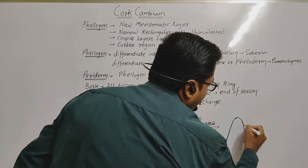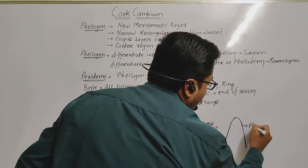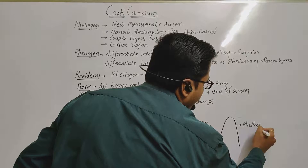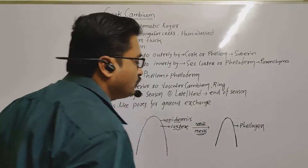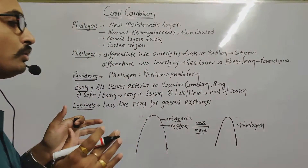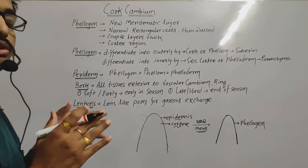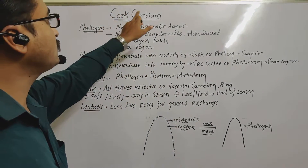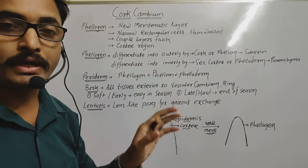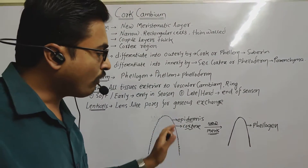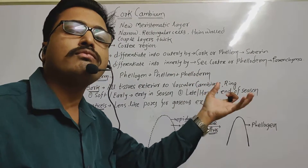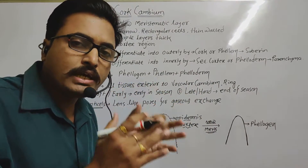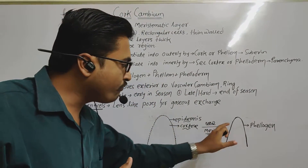There is a formation of a new meristematic layer, and this new meristematic layer is known as phelogen. Phelogen is also known as cork cambium. The formation of this new layer of meristematic tissue is the process of phelogen formation.